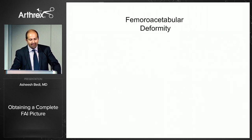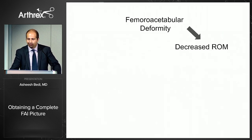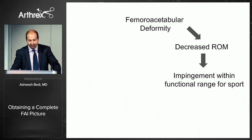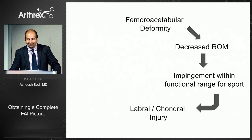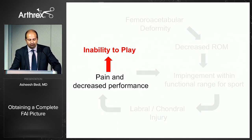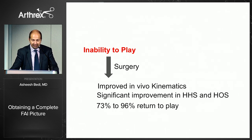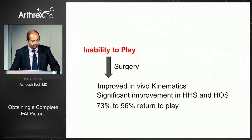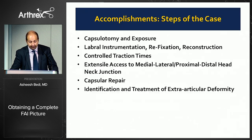For the athlete it's different. They have FAI, they lose range of motion, they get impingement in their functional range of sport, then they get cartilage and labral injury. They don't come to us until it starts hurting their performance or causing pain, and then they care about it when they can't play. Our opportunity is to intervene at these different steps for good outcomes.